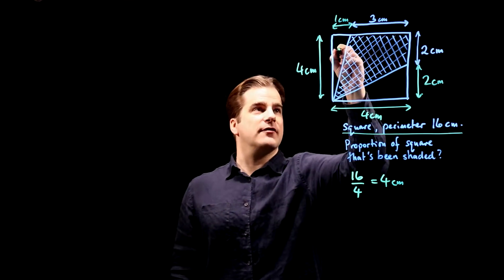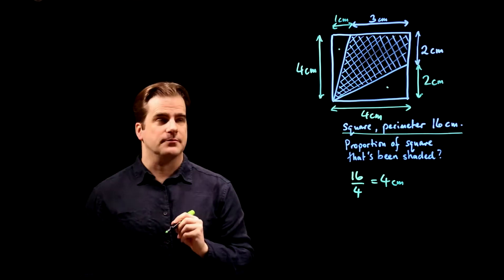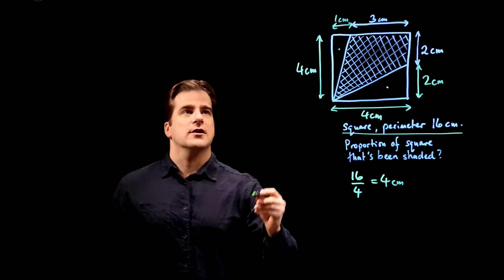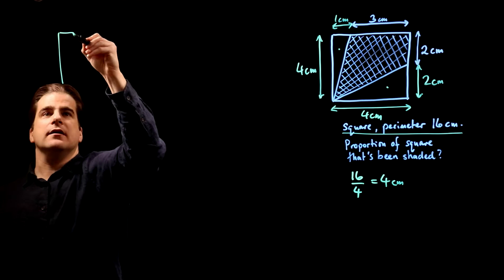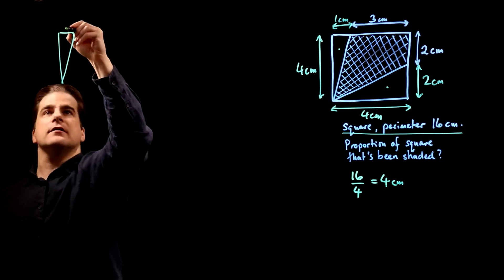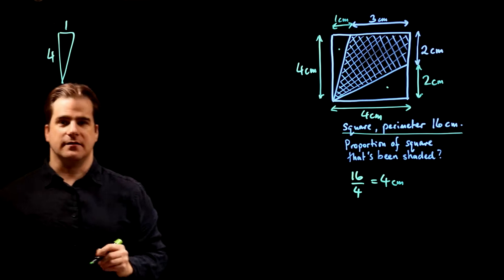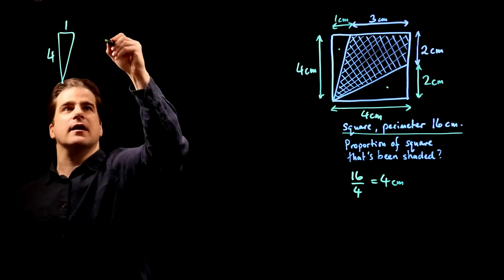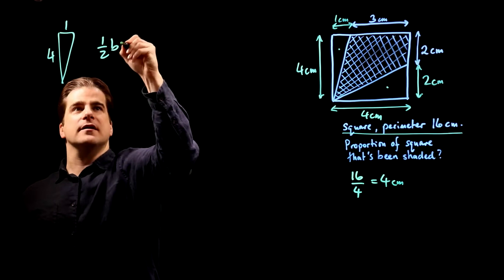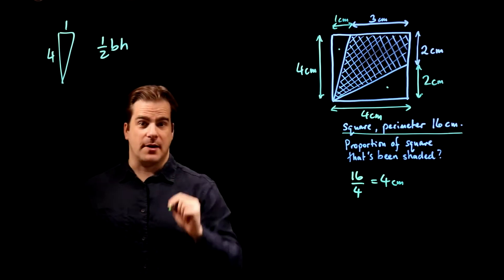So let's do that. We're going to work out the area of that triangle and the area of that triangle. So, firstly, this triangle, okay, that's one centimetre and that's four centimetres. Formula of the area of a triangle is half base times height. You need to remember that.